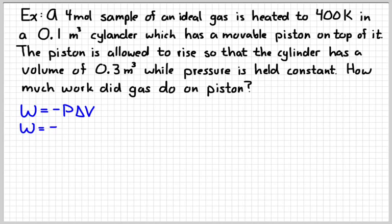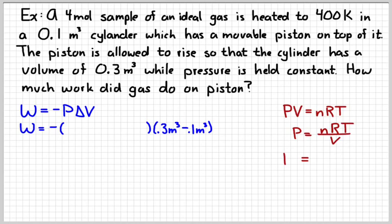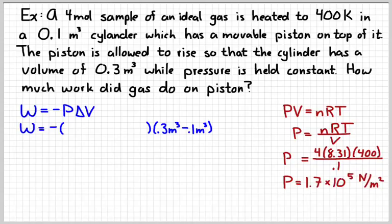So the negative sign is part of the equation. We don't know what the pressure is yet, but I know that the volume change is 0.3 meters cubed minus 0.1 meter cubed. So we have a volume change basically of plus 0.2 cubic meters. To find the pressure I can use the ideal gas law, which hopefully you remember. That's the PV equals nRT thing by the way. Solving that for pressure, we have 4 moles of gas. R, the ideal gas constant, is 8.31, and then the temperature is 400, divide that by 0.1, we give us a pressure of 1.7 times 10^5 newtons per meter squared.